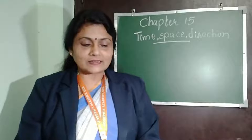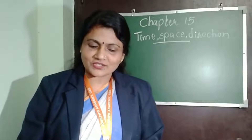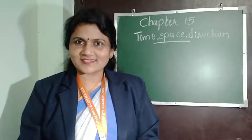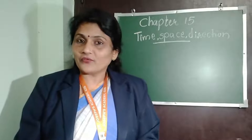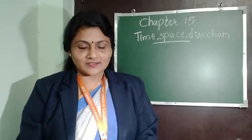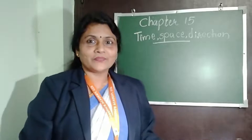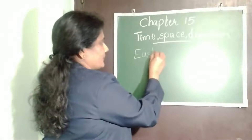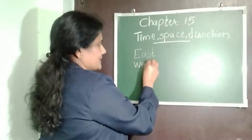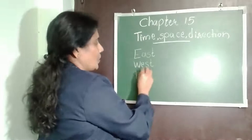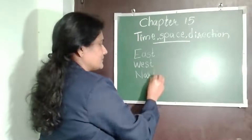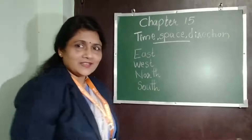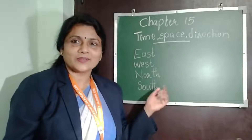The course that is taken by us to go from one place to another is called direction. There are four main directions. They are East, West, North and South. Children, these are the main directions.